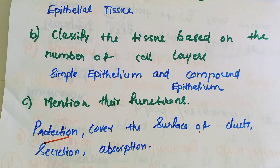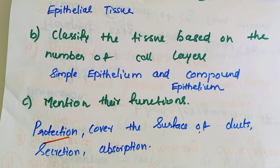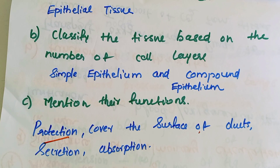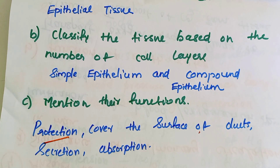The functions of epithelial tissue are protection of surfaces, covering ducts, and the features include cells closely arranged with intercellular matrix absent. These features and functions define epithelial tissue as observed under the microscope.